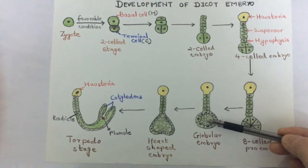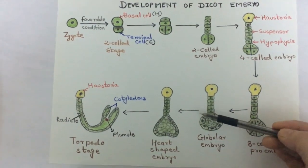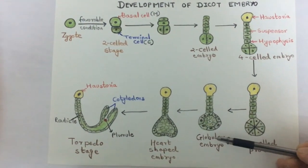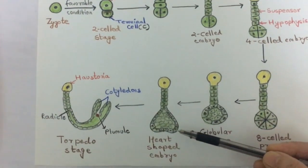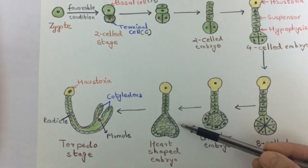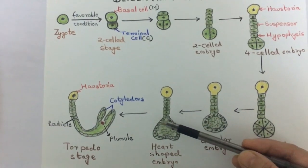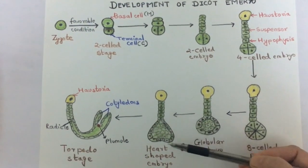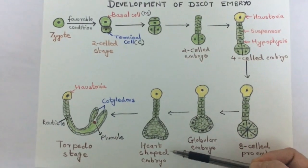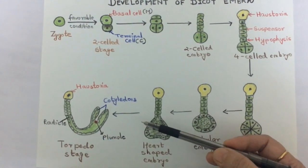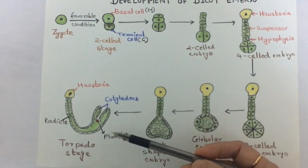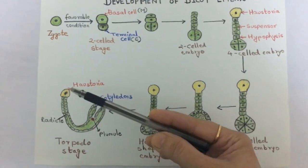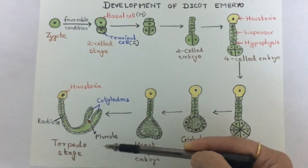Once the globular stage is complete, the globular-shaped embryo changes into the heart-shaped embryo. We can see the characteristic heart shape, and therefore it is termed the heart-shaped embryo.